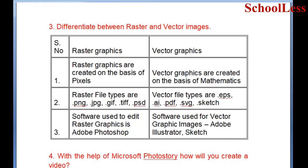Question 3: Differentiate between raster and vector images. Raster graphics are created on the basis of pixels. Raster file types include PNG, JPG, JPEG, TIFF, and PSD. The software used to edit raster graphics is Adobe Photoshop.